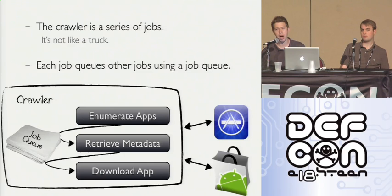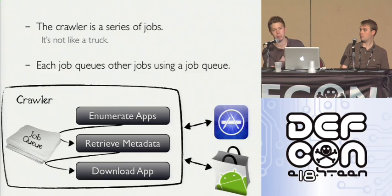On Apple, you would click on an application and retrieve the data. On Android, it's all done in the query so it's a little more optimized. Once you're on the application page, you can retrieve the binary for analysis.